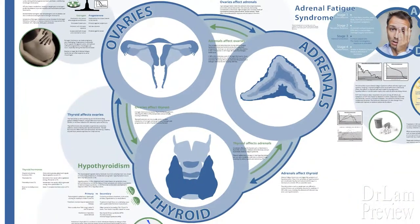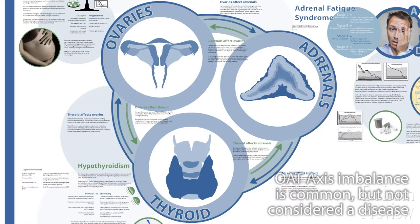OAT axis imbalance is still a very new entity. What we know comes from clinical observation, and much more research is needed. At this point we should not call this a disease state, because we still have much we don't know. But what we do know is that this situation is very common, and when the OAT axis is not balanced, many other problems can arise.